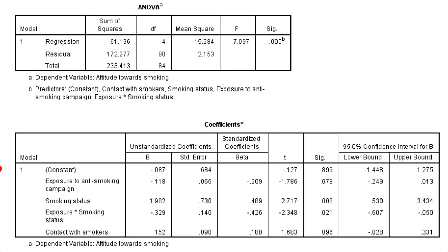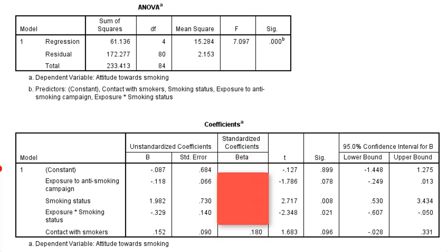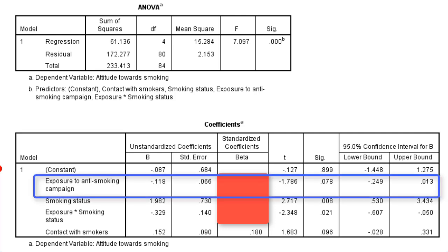If the regression model contains moderation, the standardized coefficients or betas presented by SPSS are not correct, so we should not use them. Focusing on the unstandardized coefficients, we have minus 0.12 for the effect of exposure. This is the effect for the reference category — the 0 category on the moderator — so this is the slope of the regression line for non-smokers, who are coded 0 on the smoking status variable.